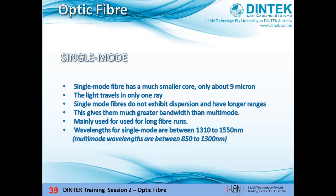Single-mode fibre has a much smaller core — only 9 micron — and the light travels in only one ray. It's used for telephony and CATV with laser sources with longer light wavelengths of between 1310 and 1550 nanometres. Because single-mode fibres don't have to deal with multiple light waves, they don't suffer from dispersion issues to the same extent as multi-mode. They're also better at retaining the fidelity of each light pulse over long distances, meaning single-mode fibres can have higher bandwidth and a much longer range than multi-mode fibres.